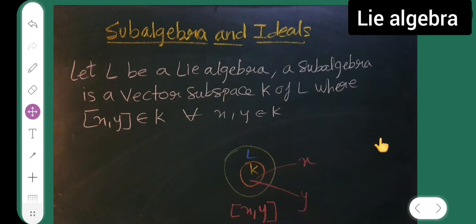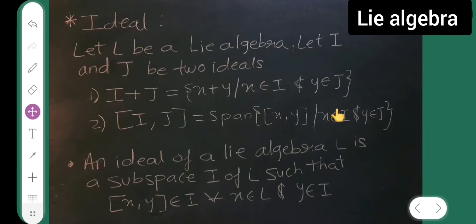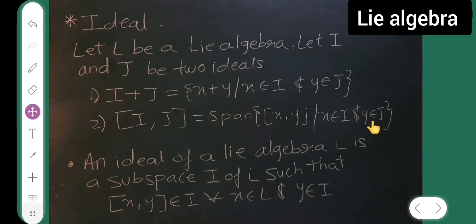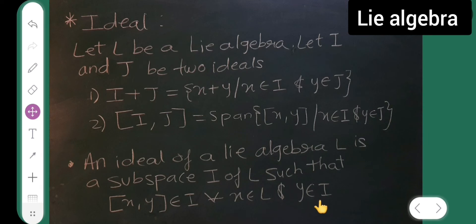Next I'll go to ideals. The definition of an ideal: let I and J be two ideals. Then I plus J equals the set of x plus y where x belongs to I and y belongs to J. The Lie bracket of I comma J equals the span of the Lie bracket of x comma y where x belongs to I and y belongs to J. An ideal of a Lie algebra is a subspace I of L such that the Lie bracket of x comma y belongs to I for all x in L and y in I.